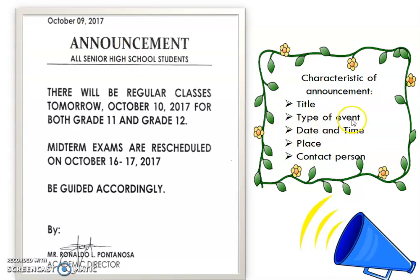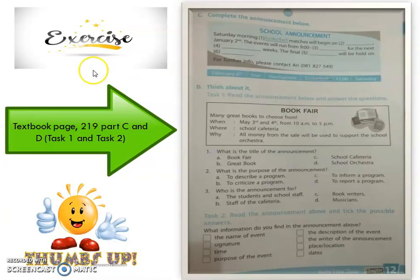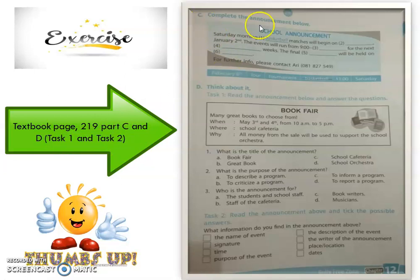Ada jenis eventnya — ini reschedule for midterm exam and regular classes for tomorrow. Kemudian ada date and time — specific date and time. Other: place. And other: contact person — this is the contact person. Okay, this is your exercise: textbook page 219, for C and B — plus one and plus two.